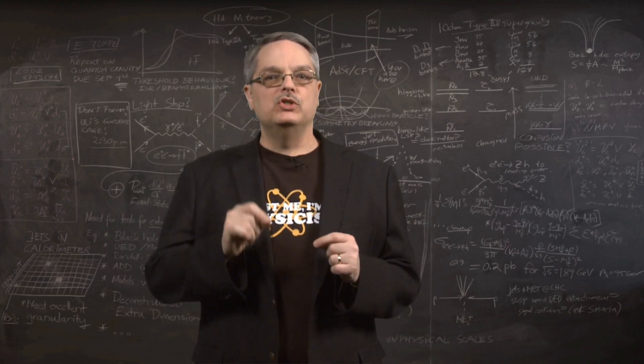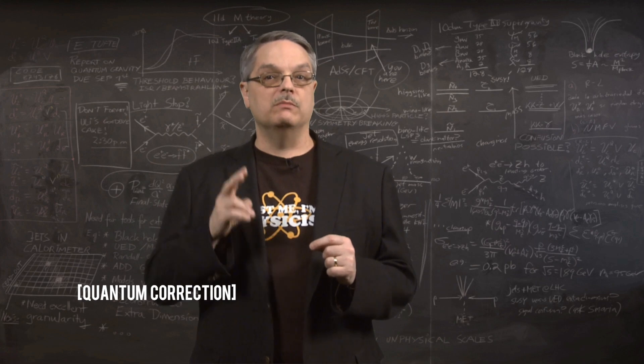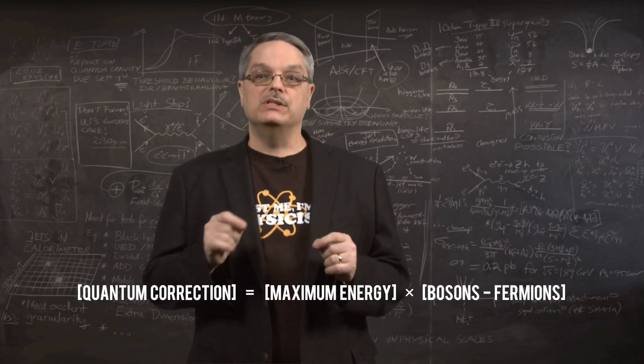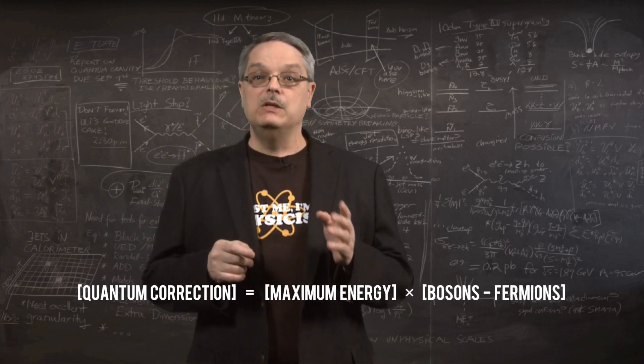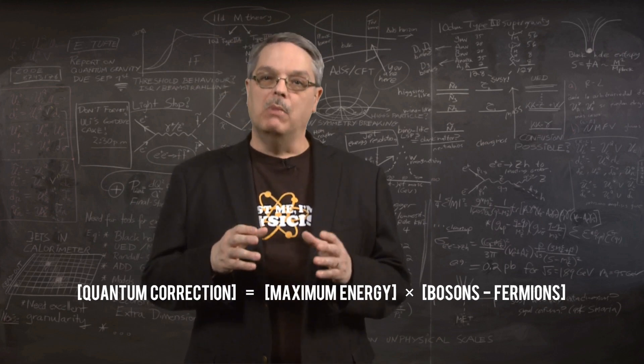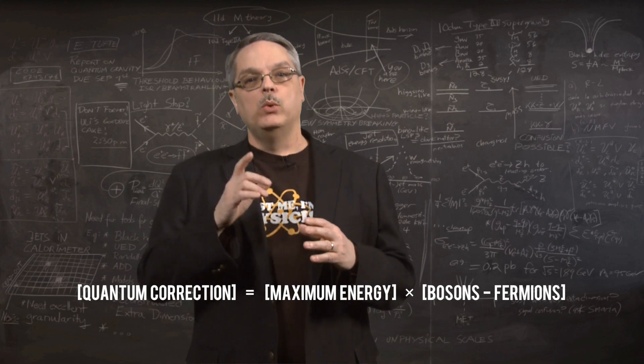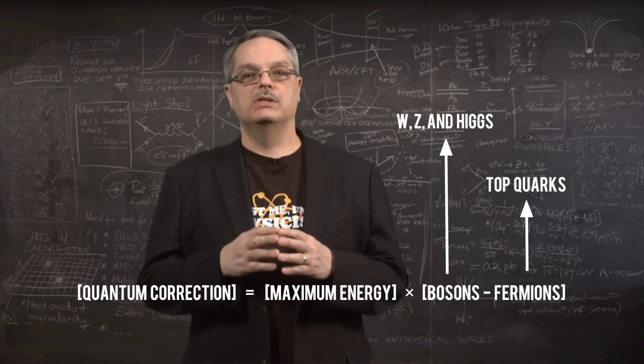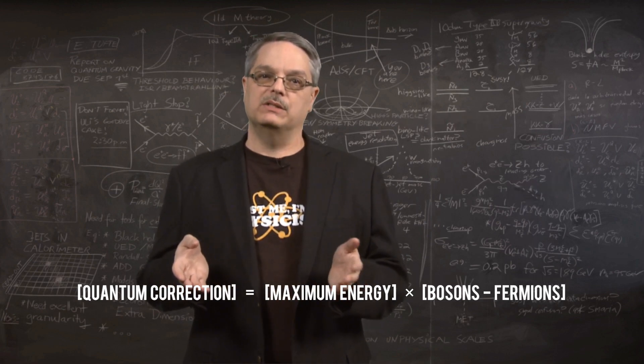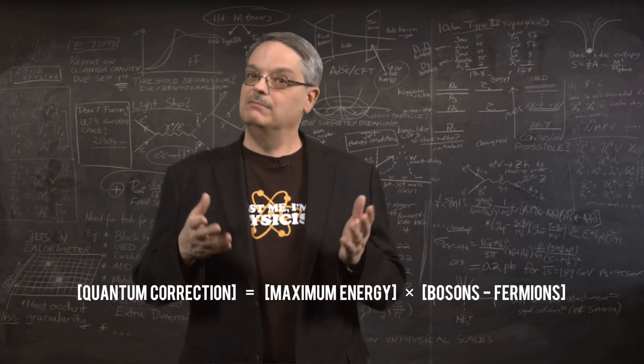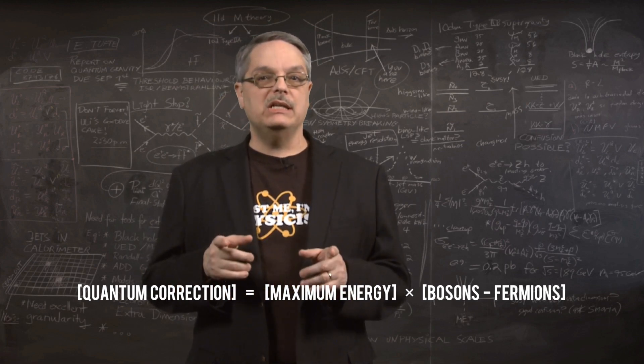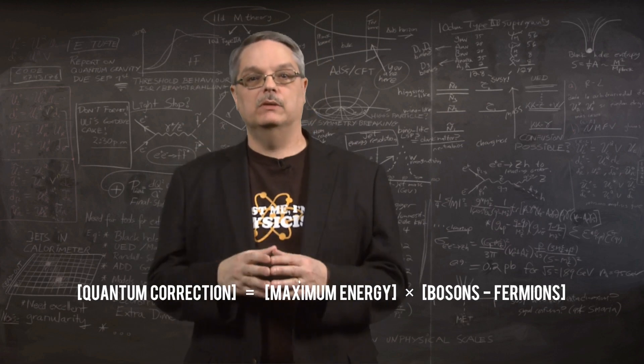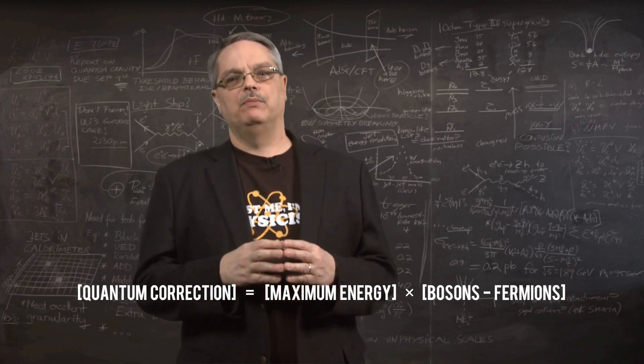So now we get to the meat of the problem. The contribution to the mass of the Higgs boson from quantum effects comes from two terms multiplied together. The first term involves the maximum energy at which the standard model should apply, and the second term depends on the mass of all the important bosons minus the mass of all the important fermions. We remember that this means the W, Z, and Higgs bosons and the top quarks, but we can just write it as bosons minus fermions. So this simple equation tells us everything: multiply these two numbers together, and the result should be small, meaning a number somewhere between zero and a hundred or so.